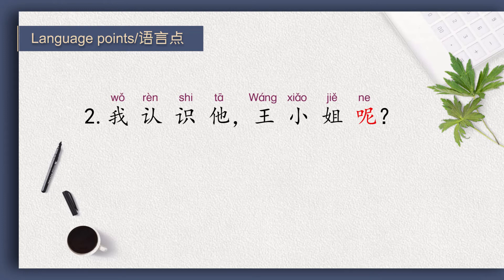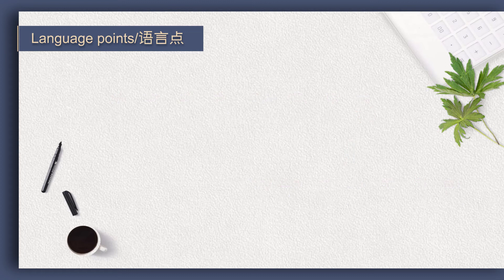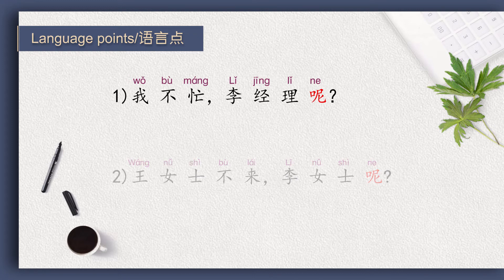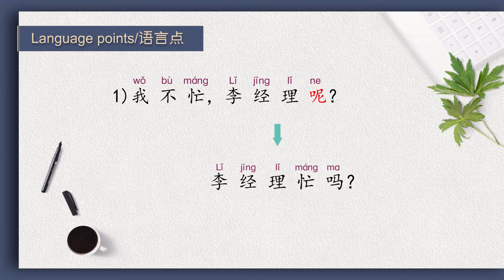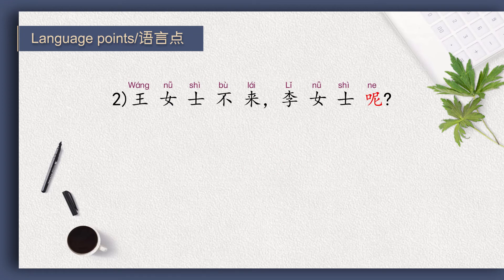我认识她。 王小姐呢? Here 王小姐呢 means 王小姐认识她吗? Please tell me the meanings of the 呢 questions in these two sentences. In the first, 李经理呢 means 李经理忙吗? In the second, 李女士呢 means 李女士来吗?